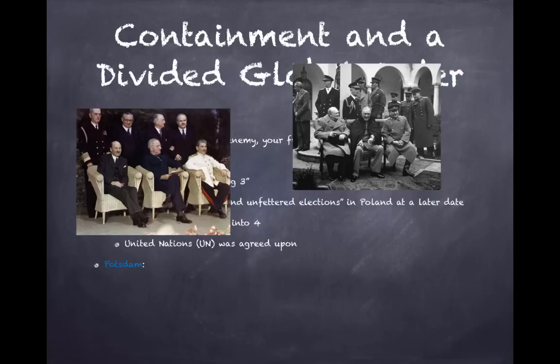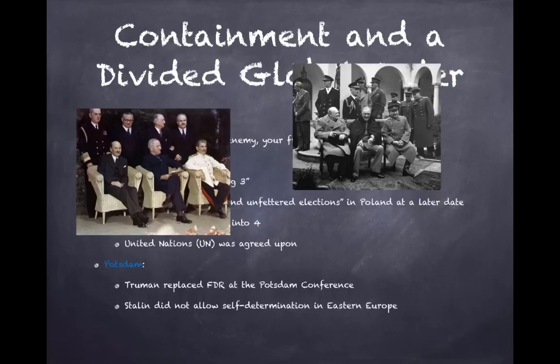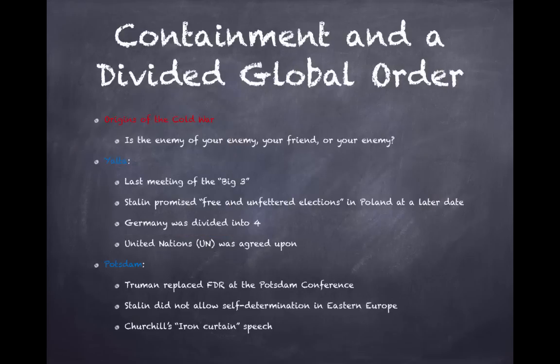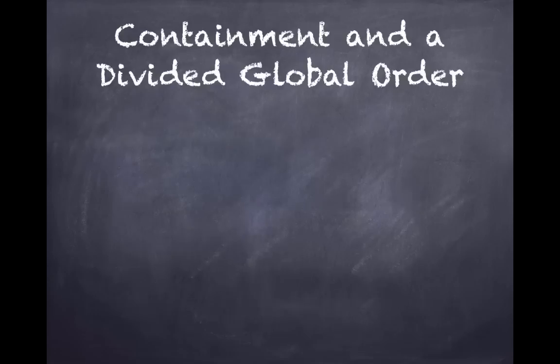In July and August 1945, as the war was ending, the Potsdam Conference took place. Truman replaced FDR and Churchill was out as well. Stalin did not allow for self-determination in Eastern Europe, which the US pushed back on. Stalin argued that Russia had been invaded twice in 150 years and needed a buffer zone. Shortly after, Churchill gave his famous Iron Curtain speech in Missouri, describing Europe as divided between communist and non-communist nations.